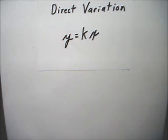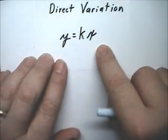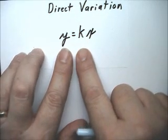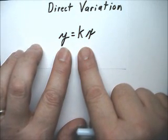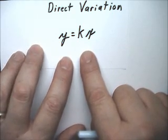Hello, this is graphing linear equations, direct variation, example 1. Direct variation is what I wrote here. Direct variation is y equals kx. So if you have an equation, and you can get it in this form, y equals kx, then it is direct variation.